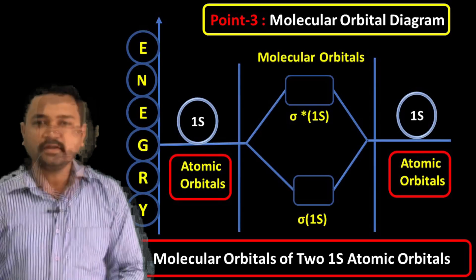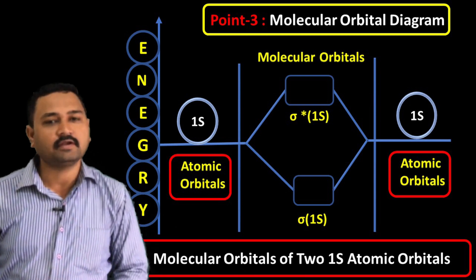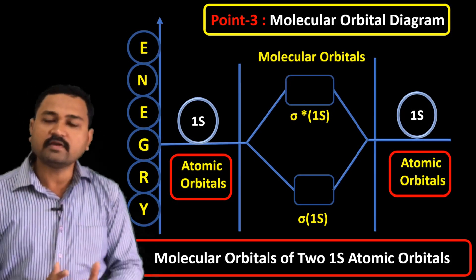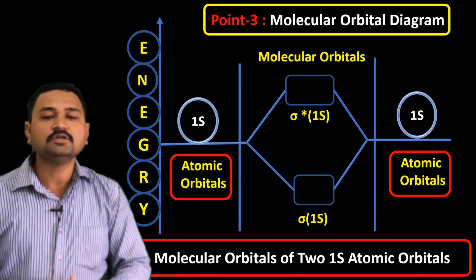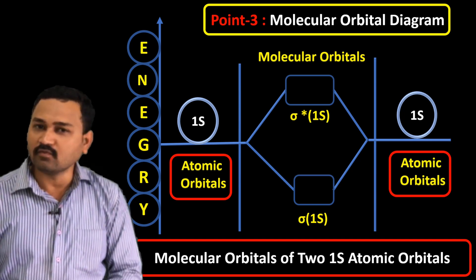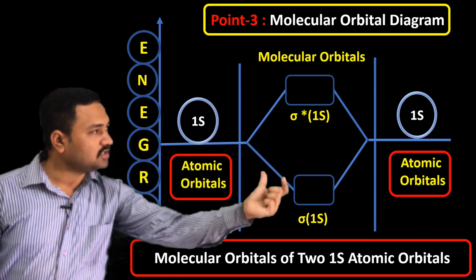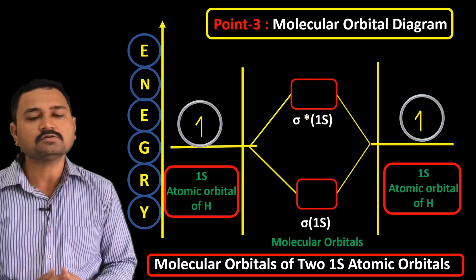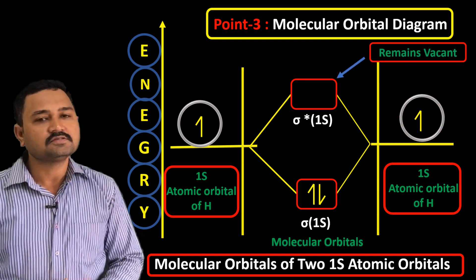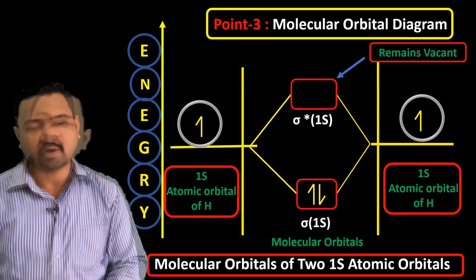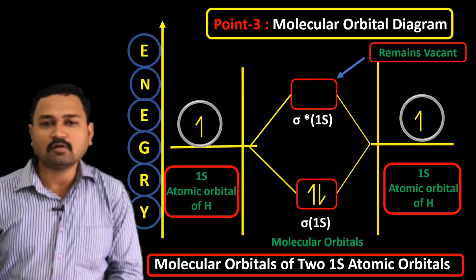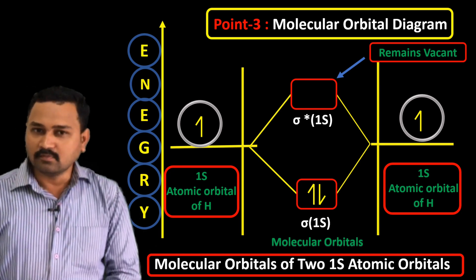Next, point number third: the construction of the molecular orbital energy level diagram. The linear combination of two 1s atomic orbitals gives two molecular orbitals — sigma 1s and sigma star 1s — as shown in this diagram. The two electrons occupy the sigma 1s molecular orbital while the sigma star 1s molecular orbital remains vacant. This is point number third, by which we can construct the molecular orbital energy level diagram for hydrogen molecule.